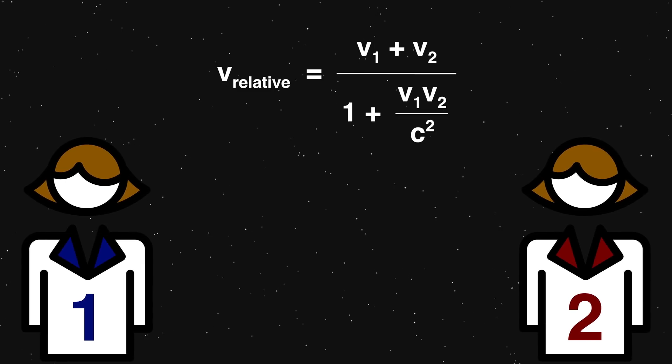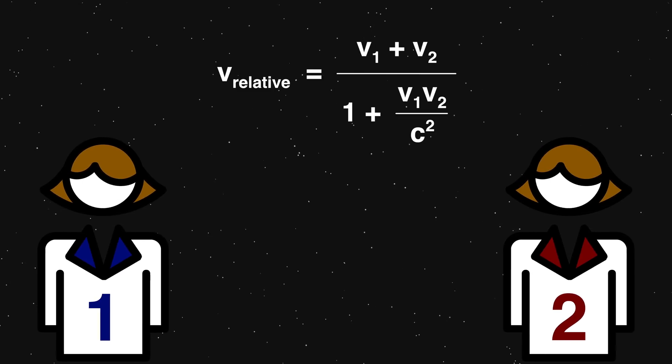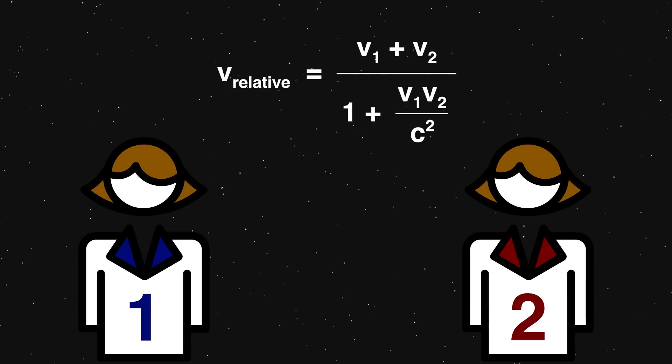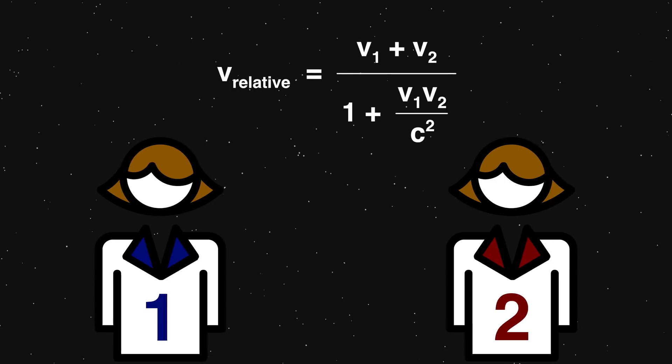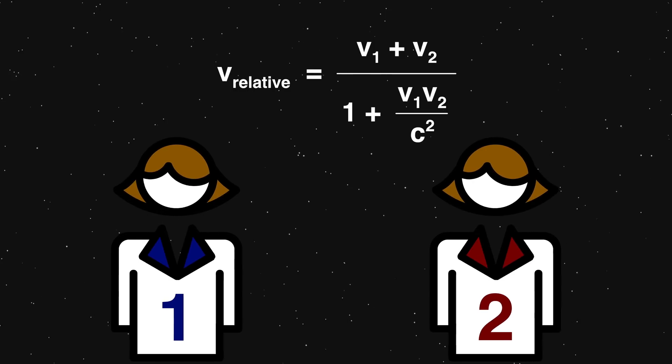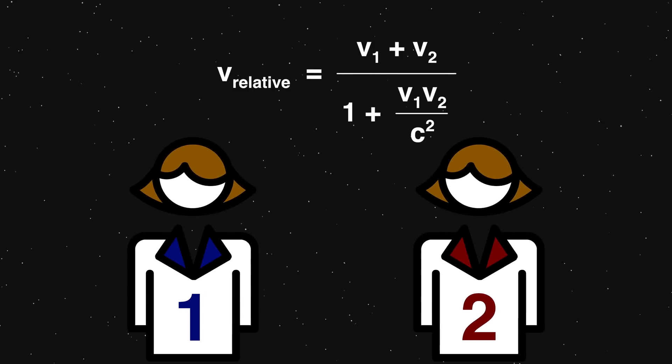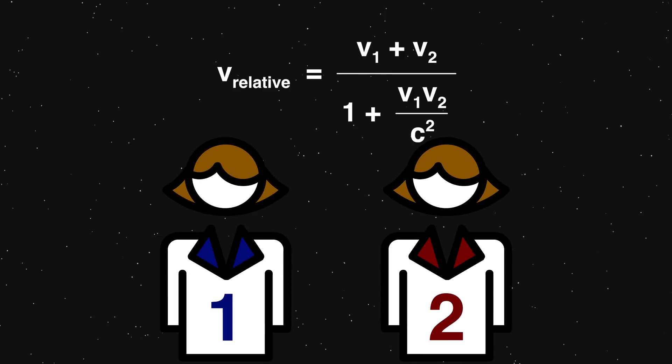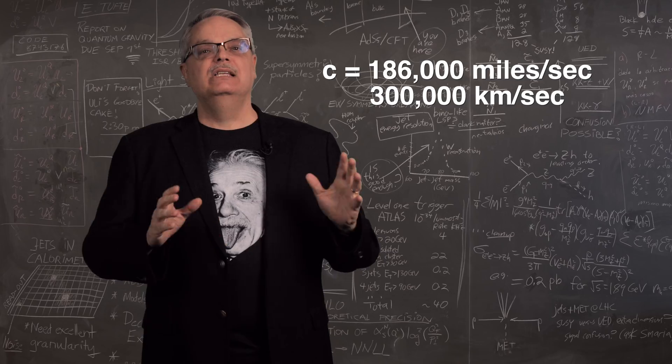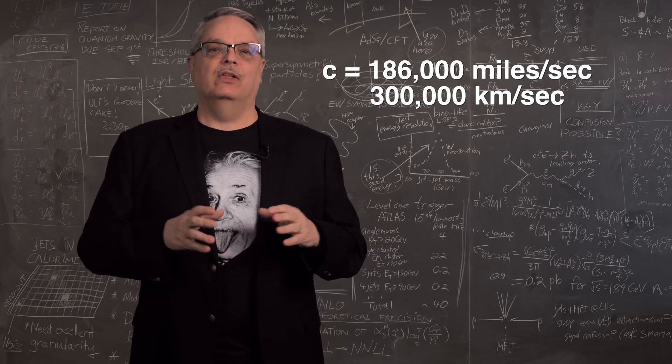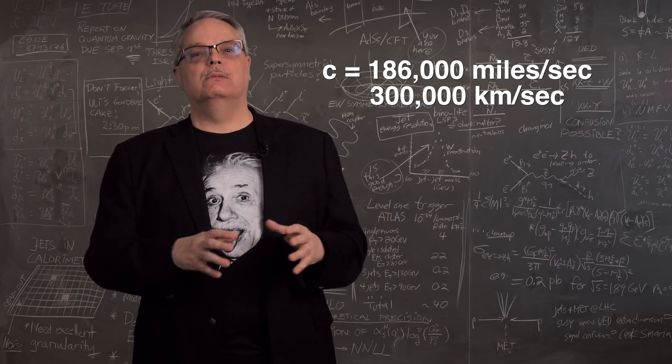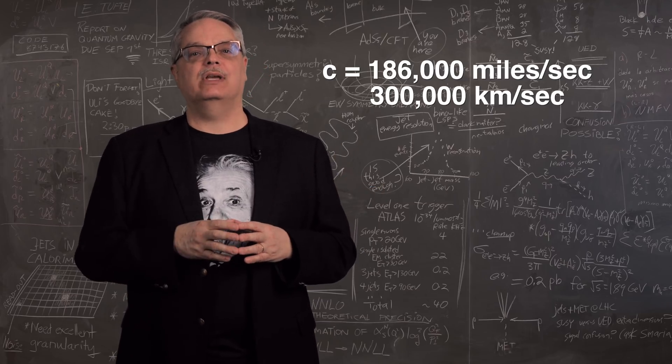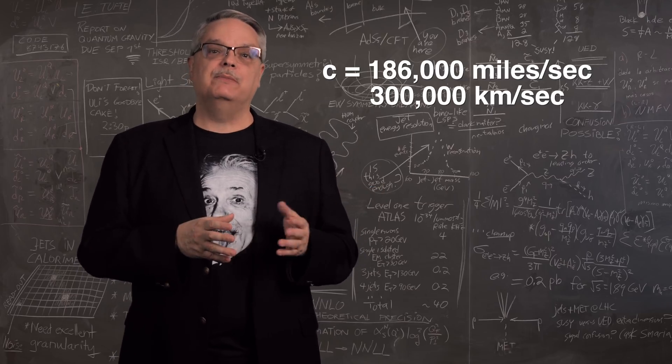If you see two people, call them one and two, moving towards or away from one another at velocity v1 and v2, the two of them will see their relative velocity is simply v-relative equals v1 plus v2 all divided by one plus v1 times v2 divided by c squared. C is, of course, the speed of light and it's a ginormous number, specifically 186,000 miles per second or 300,000 kilometers per second. It's fast enough to circle the earth about eight times in a single second.